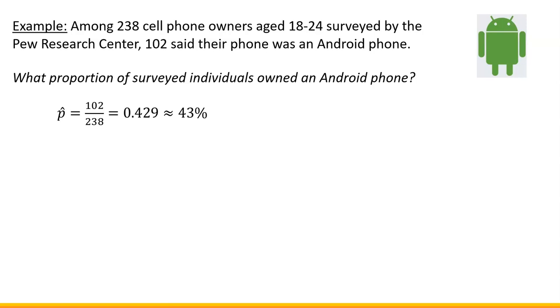by the way sample proportion we denote by p hat, we have to take the number of individuals that have an Android phone and divide by the total number of individuals in that sample. So we obtain that the proportion of surveyed individuals that own Android phone is 43%. So once again, 43% represents sample proportion.